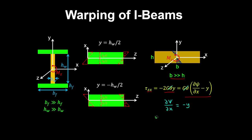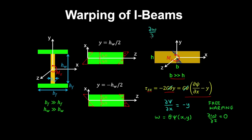The warping displacement was dependent on the rate of twist and the warping function, where the warping function was a function of x and y. Therefore the partial of the warping displacement with respect to z is zero. This is the assumption of free warping — there is no axial strain in the z direction. Therefore the partial derivative of w with respect to x equals the rate of twist multiplied by the partial derivative of the warping function with respect to x, which gives negative y.